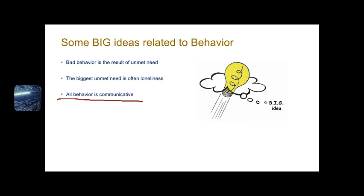The most important lesson I've learned about human behavior is that all behavior is communicative — meaning all behavior is trying to articulate something to us, just through behavior and not necessarily words. Think about it this way: what does a baby do when hungry? It cries. What does a baby do with a dirty diaper? The baby cries. When the baby has a temperature? The baby cries. When tired? The baby cries. That child hasn't learned yet how to express itself in any other way. All behavior for that child is communicative — the only difference is it's expressed through one primary strategy.